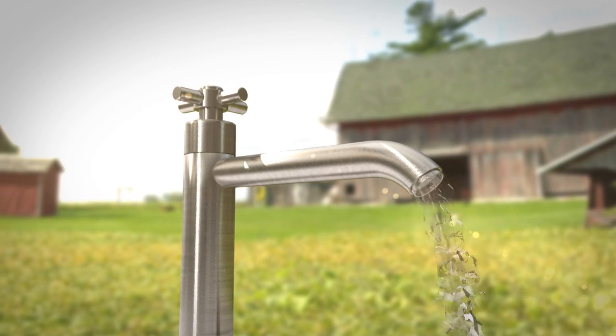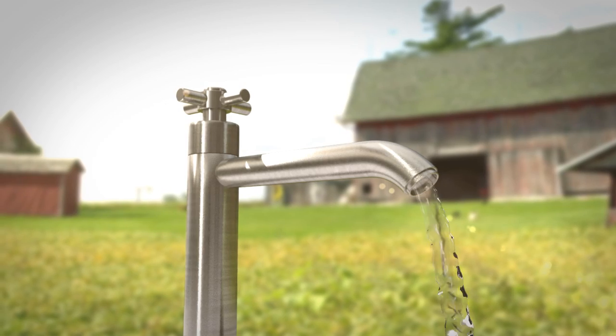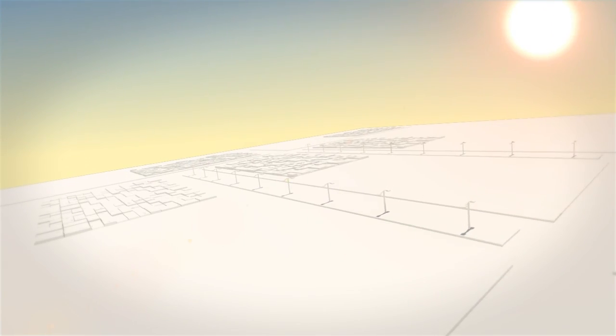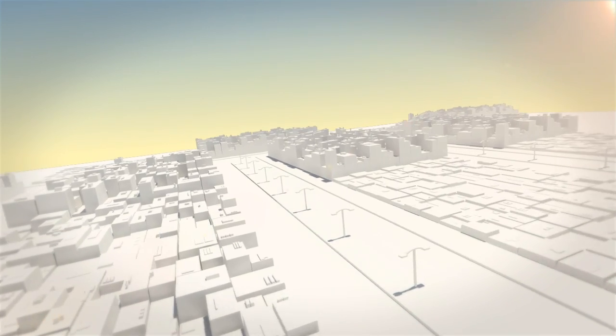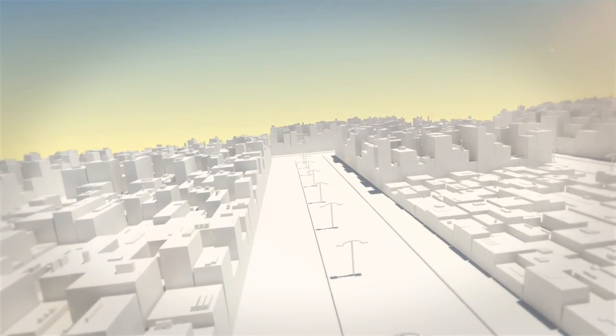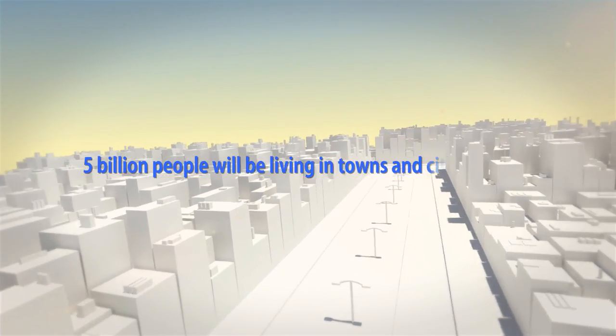The key impact on water availability is the unstoppable trend of urbanization. For the first time in history, more than half of the world's population are living in towns and cities. By 2030, this number will swell to almost 5 billion.